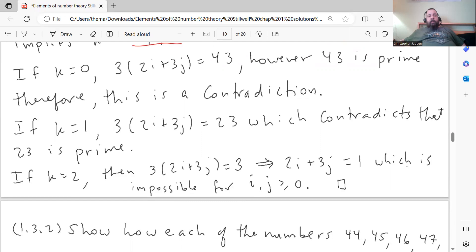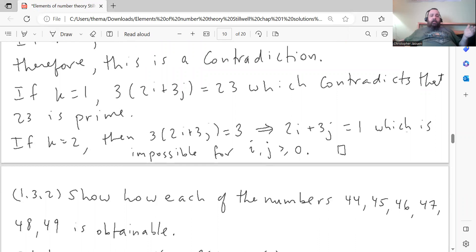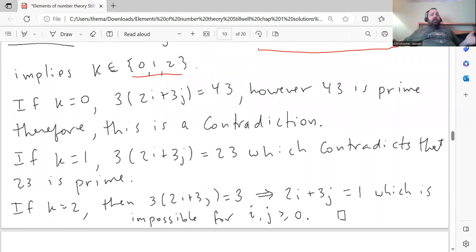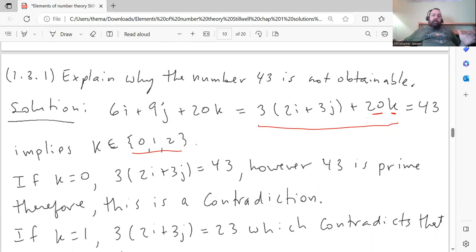If k equals 1, then you get 3 times 2i plus 3j equals 23. But you run into the same problem. 23 is prime. This statement, if it were true, would say that 3 divides 23. That's a contradiction. And lastly, if k equals 2, which would exhaust all the cases, then 3 times 2i plus 3j equals 3, which would mean that 2i plus 3j equals 1, which is impossible for i and j greater than or equal to 0. So there's no way to get 1 as a sum of this form where i and j have to be natural numbers. That exhausts all the possible cases for k, which means there's no way to represent 43 as a number of that form, provided that i, j, and k are not allowed to be integers, but they have to be natural numbers.